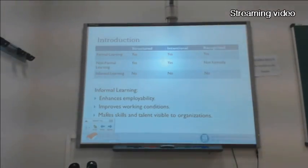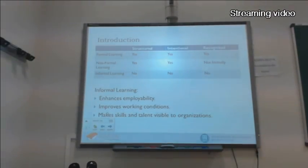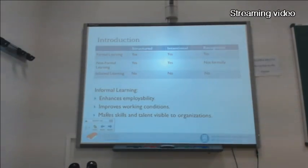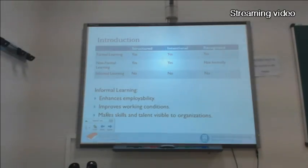For example, a person searching a specific topic on the internet and reading about it — that is informal learning. In comparison with formal and non-formal learning, informal learning is never recognized. But it is still important because it supports employability, as this type of knowledge includes things like presentation or negotiation skills. It also improves working conditions and makes skills and talent visible to organizations.